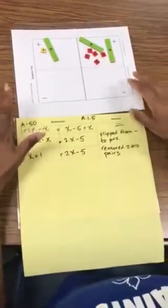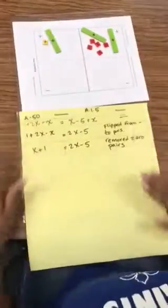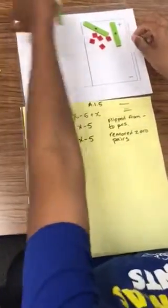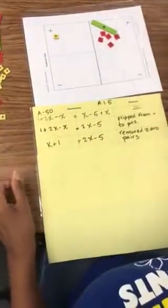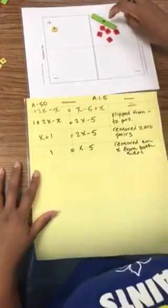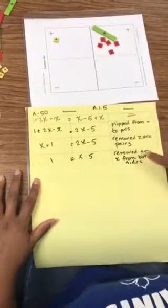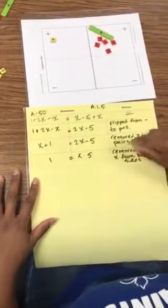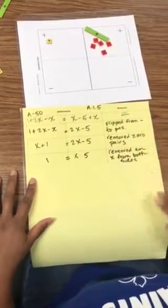I'm trying to get x alone and I have x's on both sides. So if I take away this x and take away this x, they know that's a legal move. I'm left with 1 equals x minus 5. My justification is I removed an x from both sides.